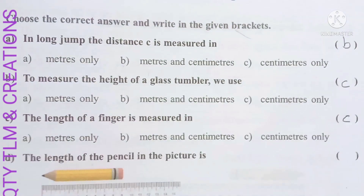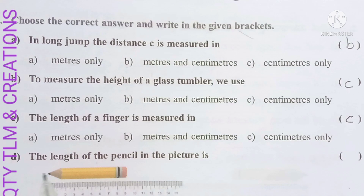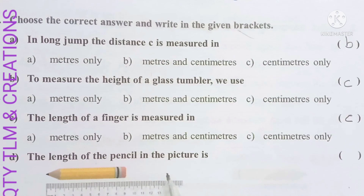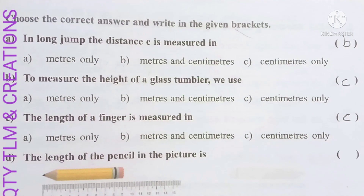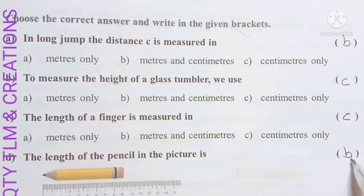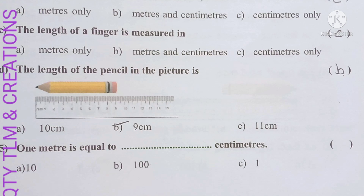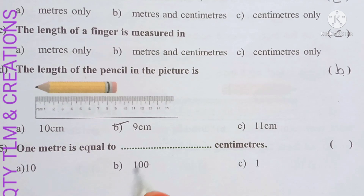Next, the length of the pencil in the picture is: one, two, three, four, five, six, seven, eight, nine — nine centimeters, so the answer is B. Next, one meter is equal to one hundred centimeters.